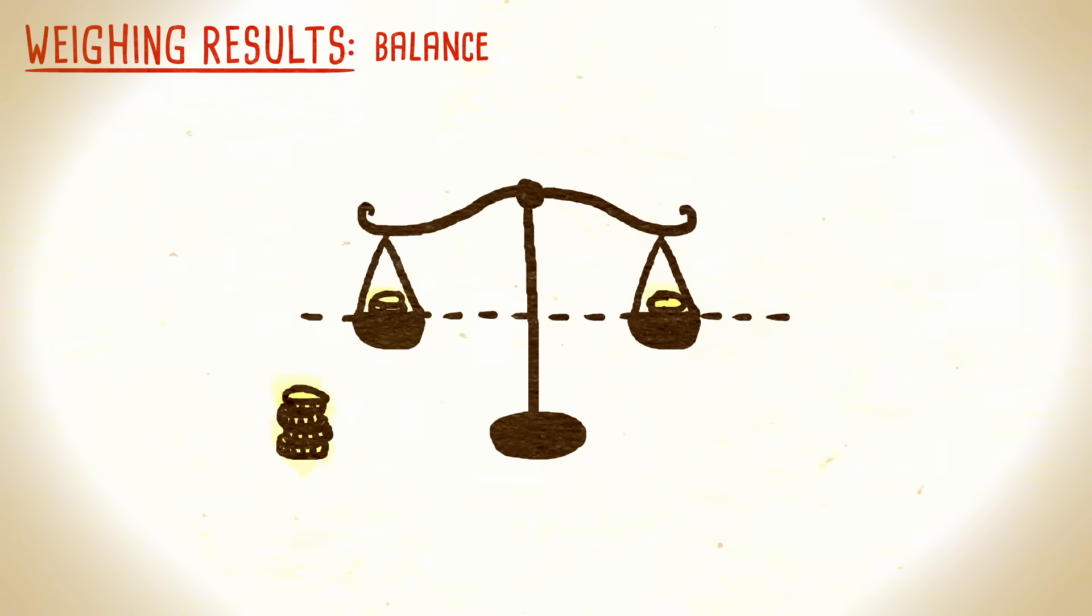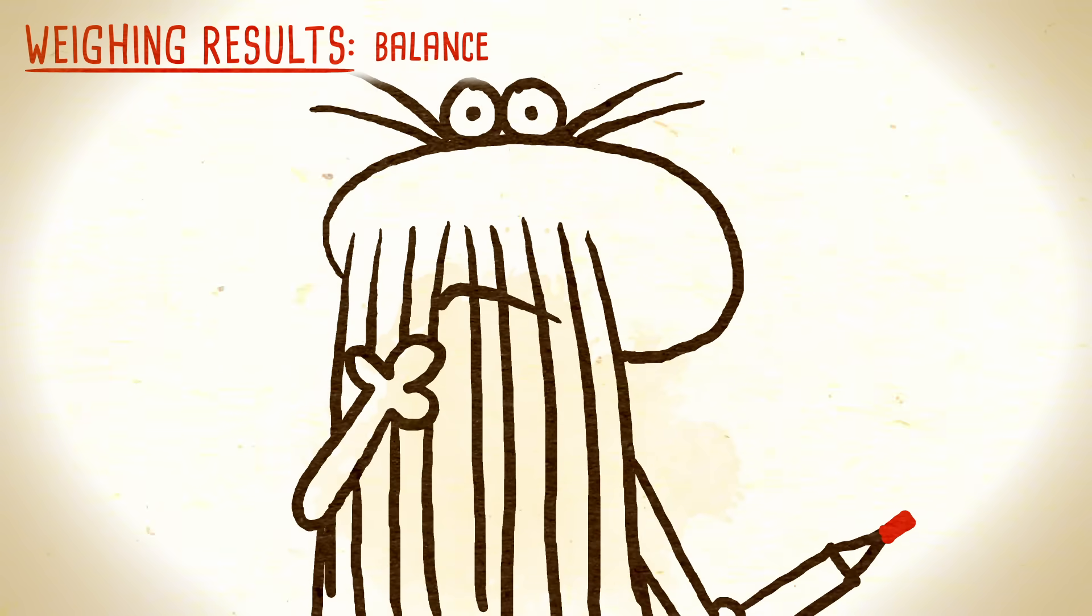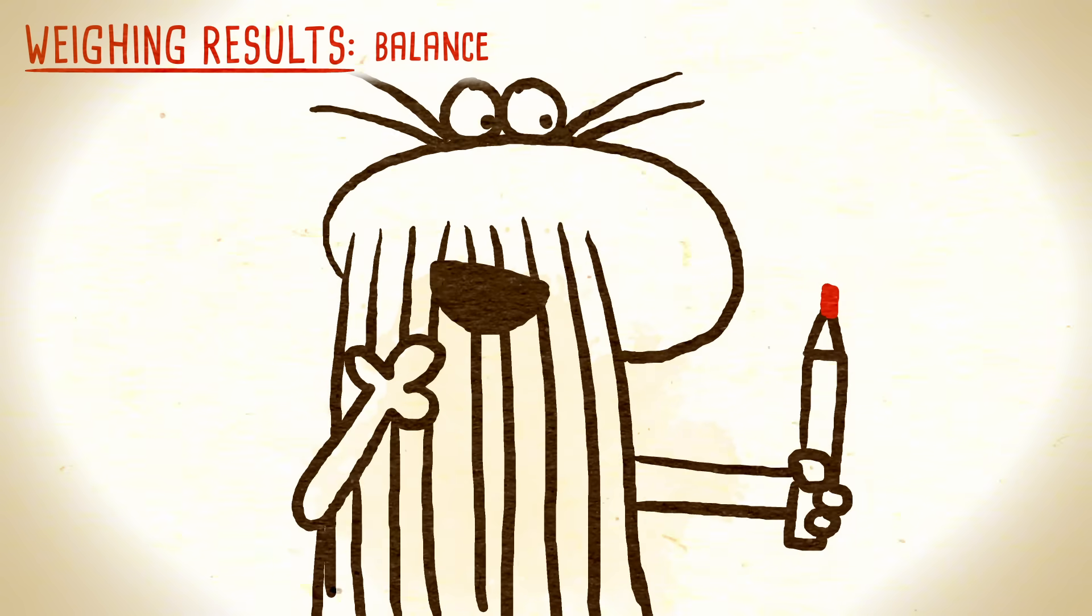If the two sides balance, all eight coins on the scale are real, and the fake must be among the remaining four. So how do you keep track of these results? That's where the marker comes in.